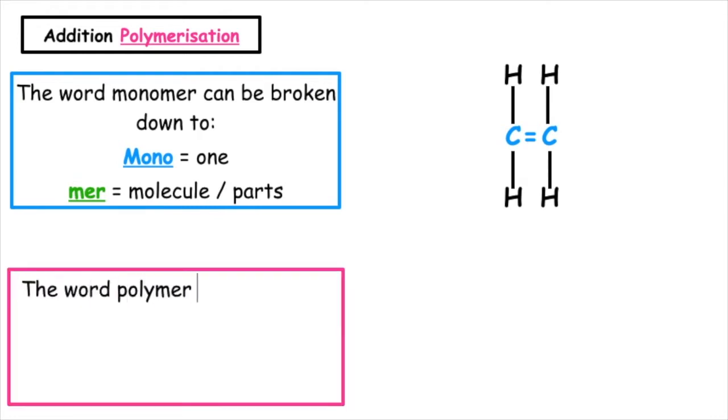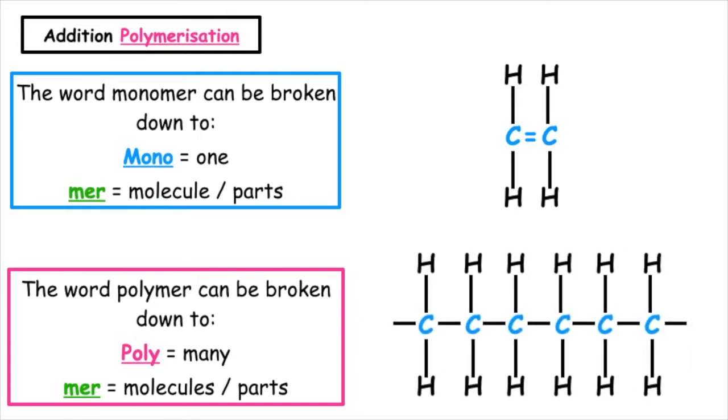The word polymer can be broken down to poly meaning many and mer meaning molecules or parts. This is where we join many monomer units together to form one long polymer chain. The polymer will have carbon to carbon single bonds and we will have to put a square bracket around this as we're just showing a small section of the polymer chain.